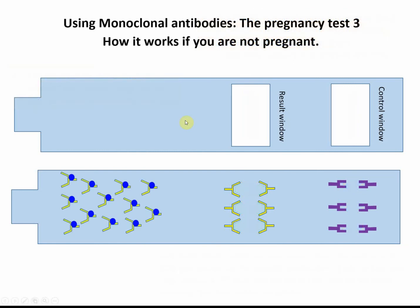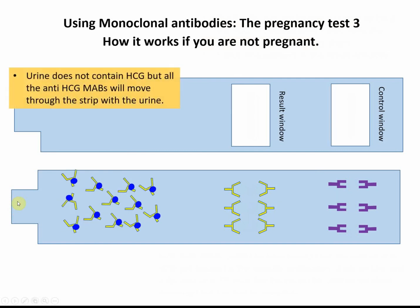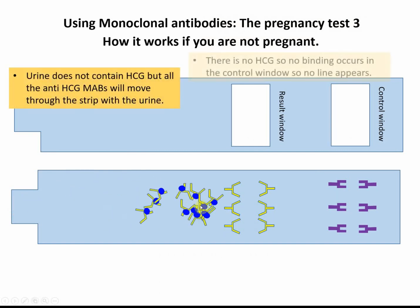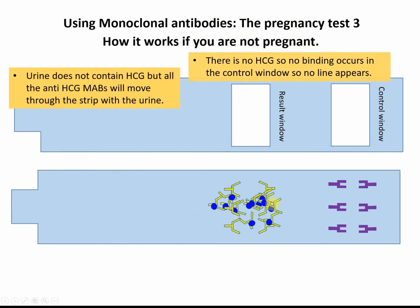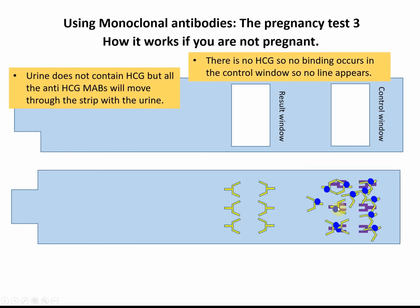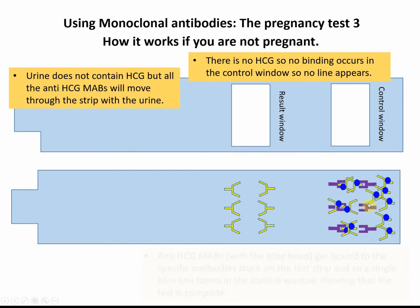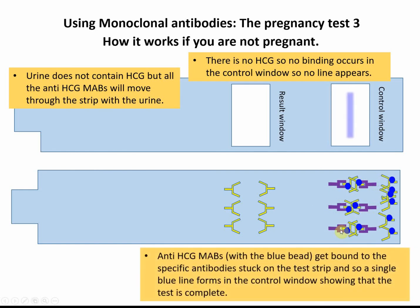Now, if you're not pregnant, when the urine comes down there's obviously no HCG. All the monoclonal antibodies move through from the reaction zone — they go straight past the results window because there's no HCG for those antibodies to bind to. These antibodies then get stuck and bind to the HCG antibodies in the control window, giving us a single line. So we get no line in the results window and a single line in the control window — and that's how you know you're not pregnant. Hopefully that makes sense.